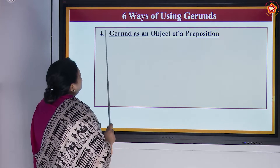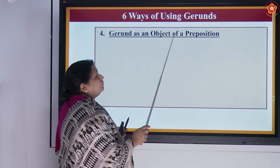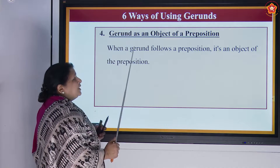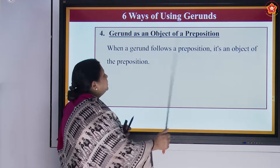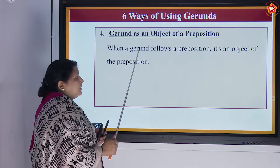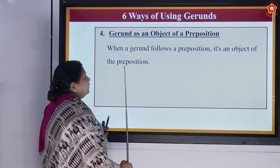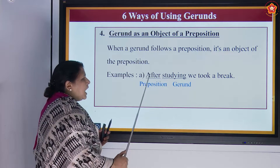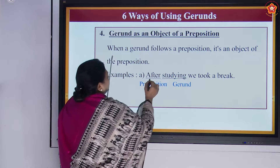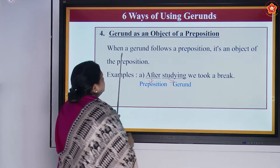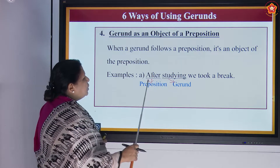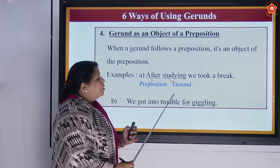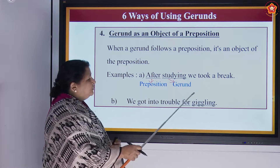The fourth type is gerund as an object of a preposition. When a gerund follows a preposition, it is the object of the preposition. Example: 'After studying, we took a break.' Here 'after' is a preposition and 'studying' is a gerund following it. Another example: 'We got into trouble for giggling.' Here 'for' is a preposition and 'giggling' is the gerund.